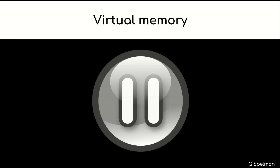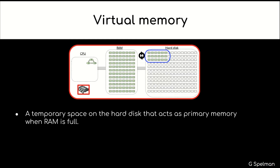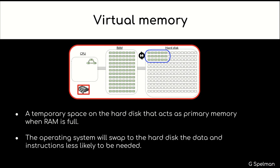Virtual memory. A temporary space on the hard disk that acts as primary memory when RAM is full. The operating system will swap to the hard disk the data and instructions less likely to be needed.